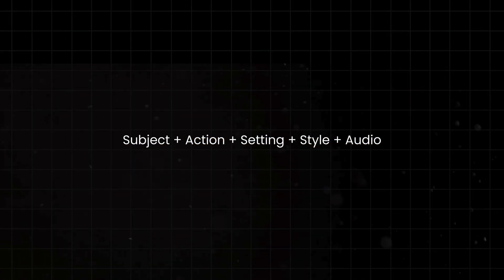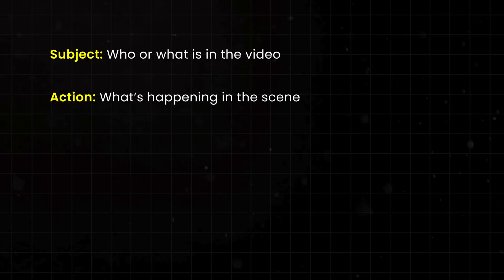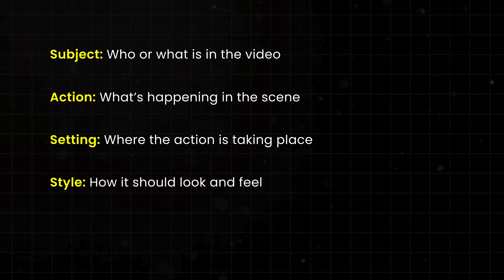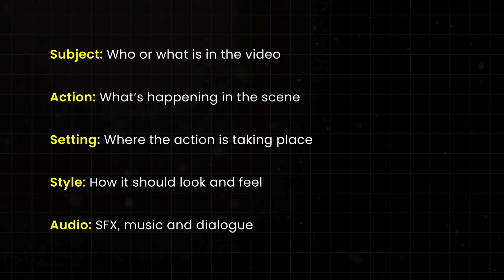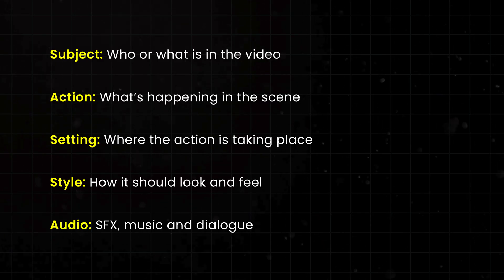Let's jump right in and create our first video together — a full-on action scene that looks like it came right out of a Hollywood blockbuster, complete with characters and speech, so we can see what VO3 can really do. When it comes to entering your prompt, you can go as simple or as detailed as you like. But here's the five-part prompt formula I use to get the best and most consistent results: Subject — who or what is in the video. Action — what's actually happening in the scene. Setting — where the action is taking place. Style — how it should look and feel visually. And Audio — any sound effects, music, or dialogue you want included.